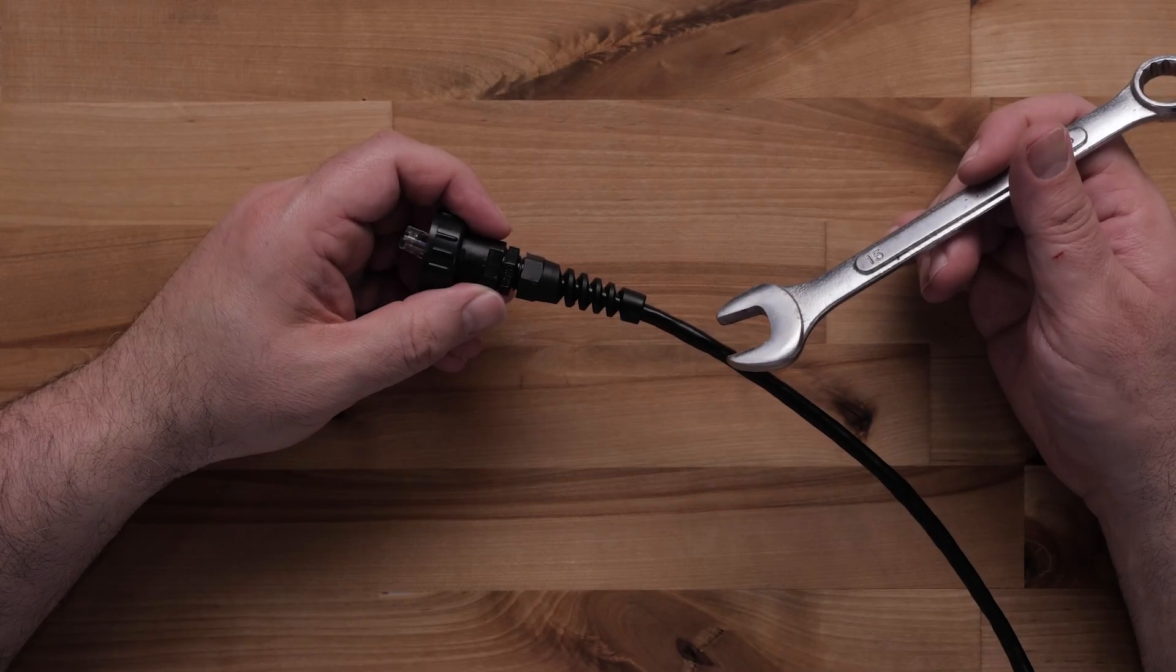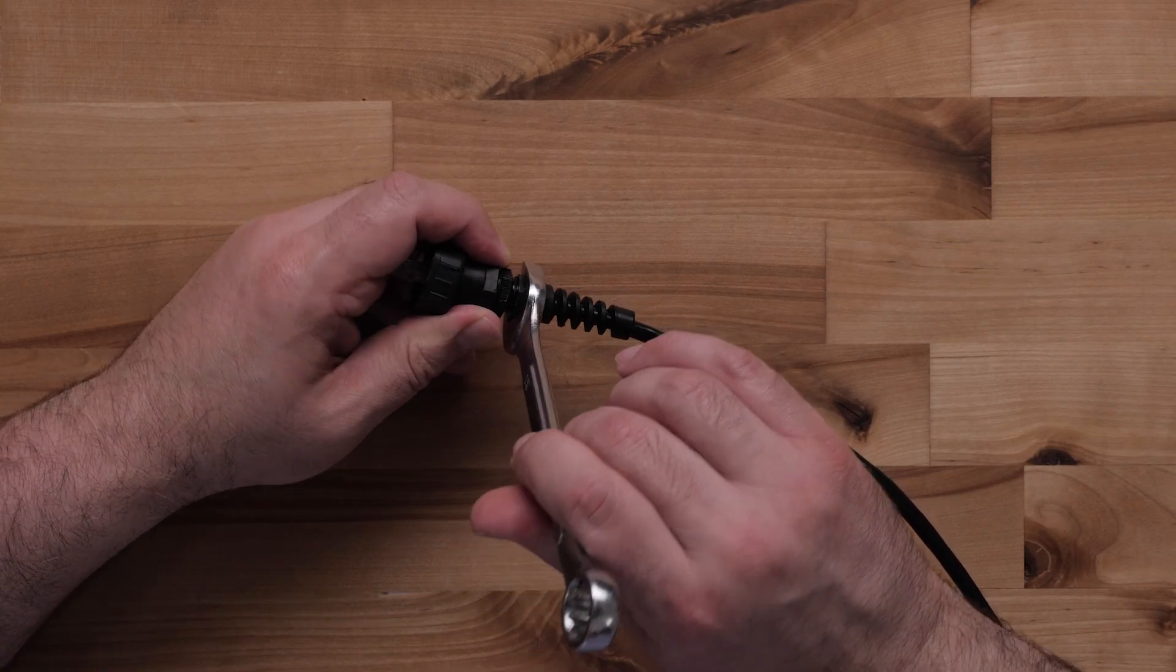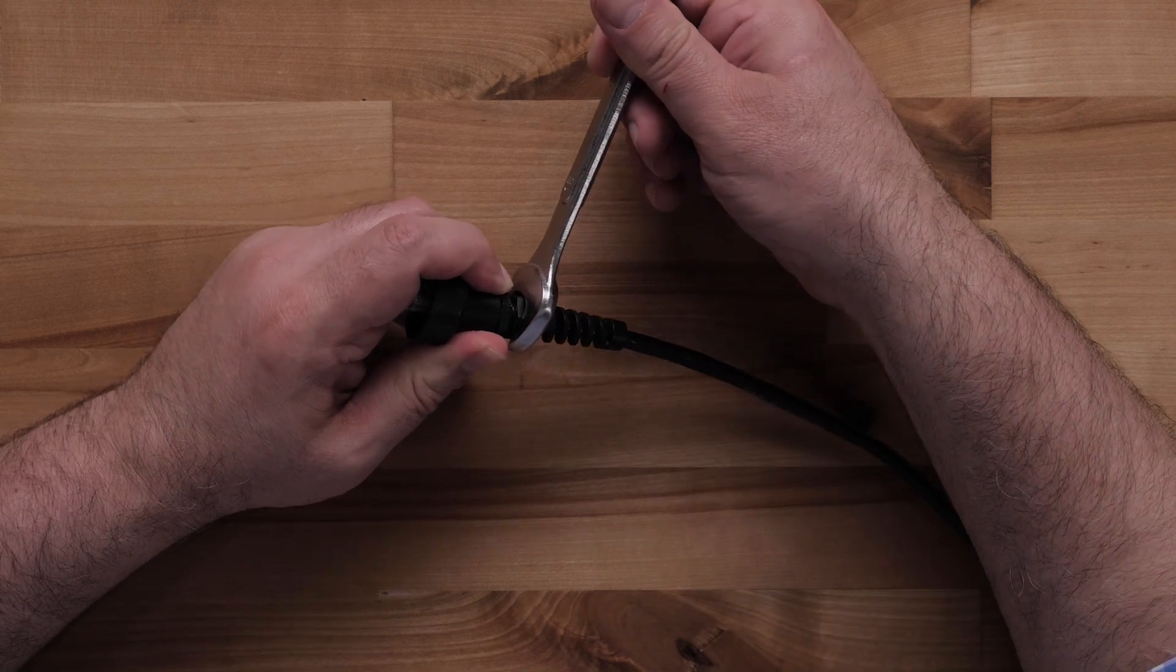Screw the strain relief nut onto the cable connection housing and tighten it with a 15mm wrench. Do not over tighten the strain relief nut.